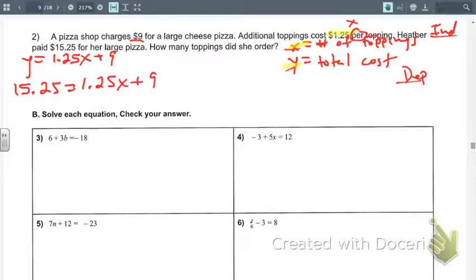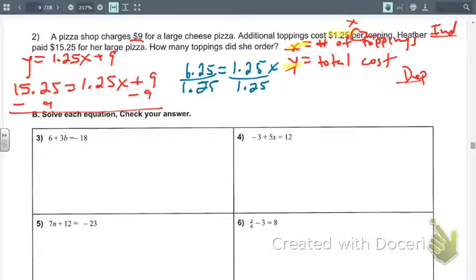Now we're going to solve for X, the number of toppings. We're going to subtract 9 from both sides. So it's going to give us 6.25 equals 1.25X. So now we're going to divide both sides by 1.25. And that's going to be 5. So 5 equals X. So Heather ordered 5 toppings.